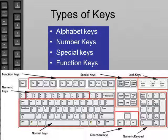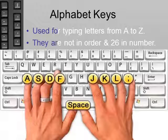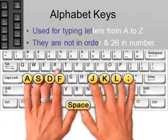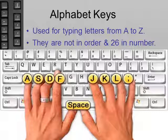They are alphabet keys, number keys, special keys and function keys. Alphabet keys have letters on them from A to Z, but they are not in order. Alphabet keys are 26 in number. We can type letters, words and sentences with the help of alphabet keys.